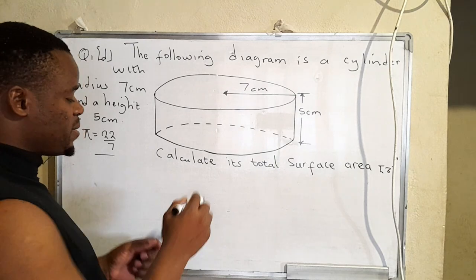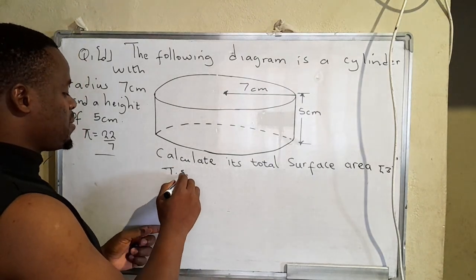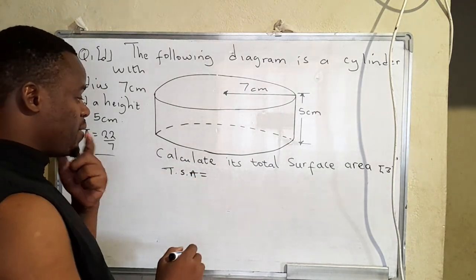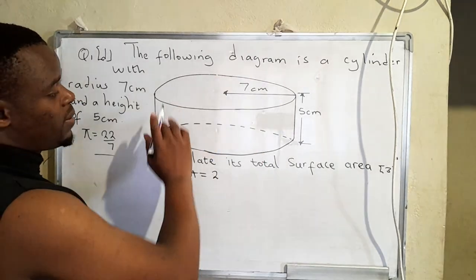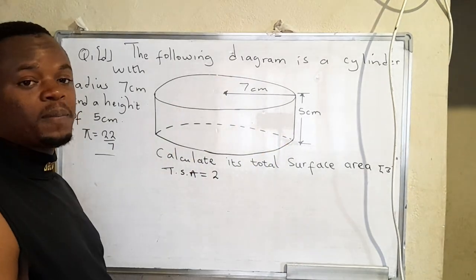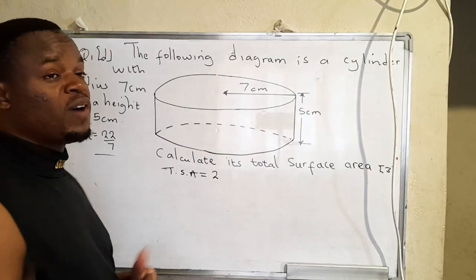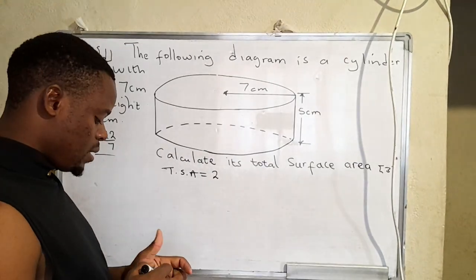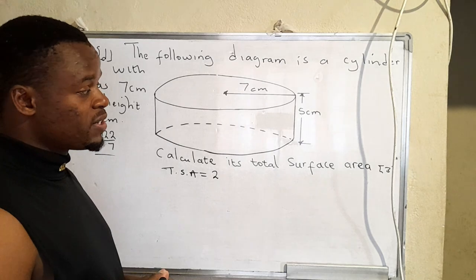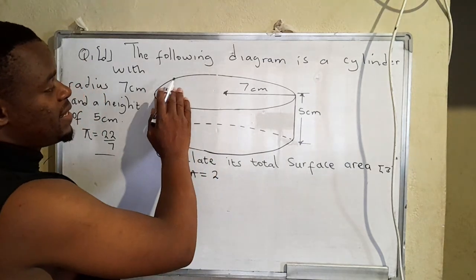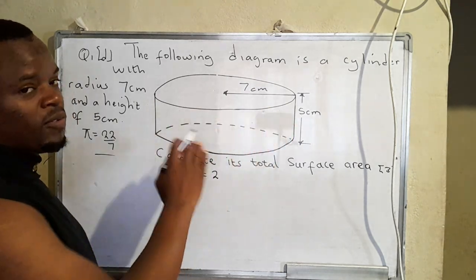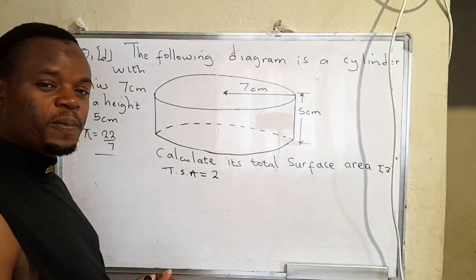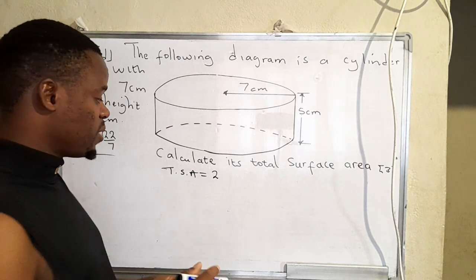So now the same calculate the total surface area. So how do you find total surface area? So the total surface area is given by 2, and since we have a circle there, we have another circle. We need to know how to find the area of the circle. So we are finding the area of that circle, the area of that circle, and then the area of the trunk. And then we add them together.